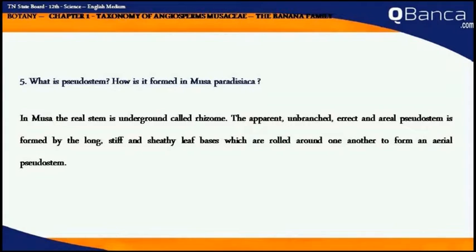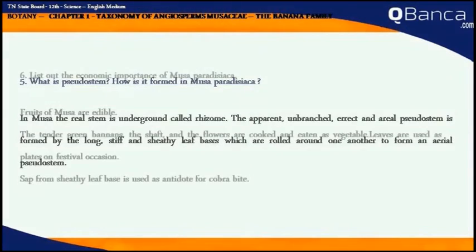What is pseudostem? How is it formed in Musa paradisiaca? In Musa, the real stem is underground, called rhizome. The apparent unbranched, erect and aerial pseudostem is formed by the long, stiff and sheathing leaf bases which are rolled around one another to form an aerial pseudostem.